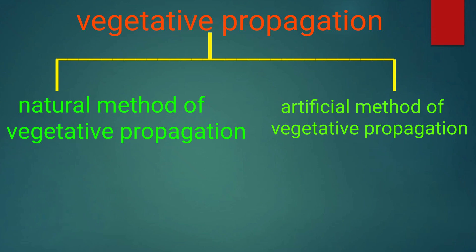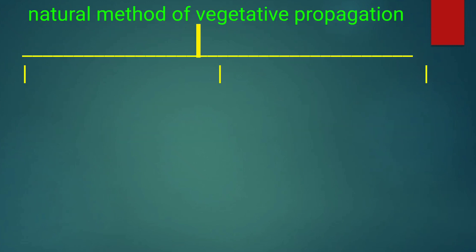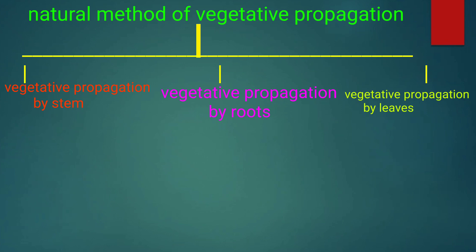To summarize: vegetative propagation is of two types — natural methods and artificial methods. Natural methods of vegetative propagation are of three types: vegetative propagation by stem, by roots, and by leaves. Vegetative propagation by stem is further of three types: stem tubers, stem bulbs, and rhizomes.